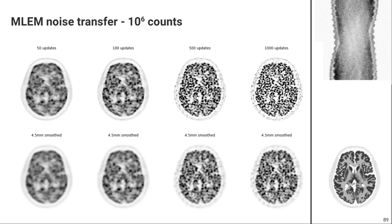If we decrease the counts even further to 10^6, there is way more noise on the measured sinogram. After 1,000 updates, close to the maximum likelihood solution, the image is very noisy and probably unusable for most clinical applications. In that case we definitely have to apply smoothing, and it also makes sense to stop the MLEM iteration early — for example, stopping after 100 updates with a bit of post-smoothing gives a more usable reconstruction than iterating long with no post-smoothing.